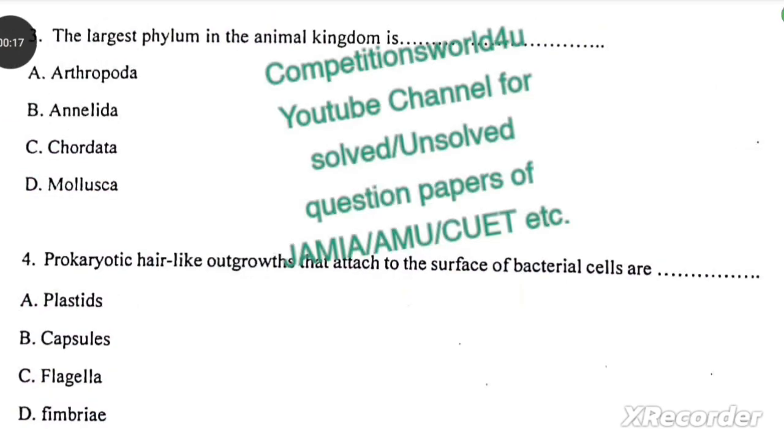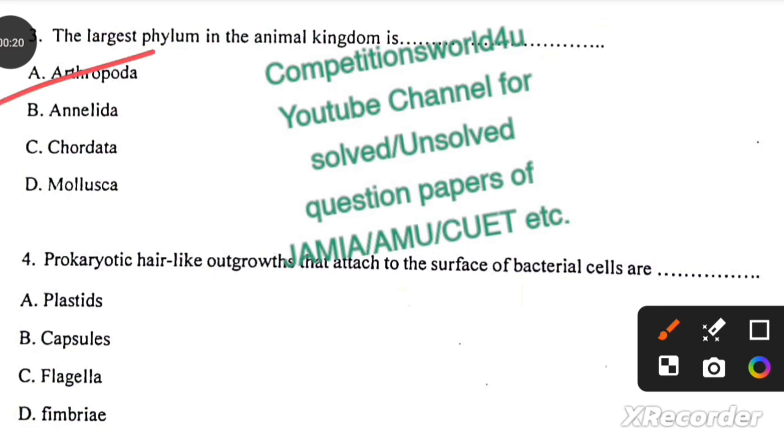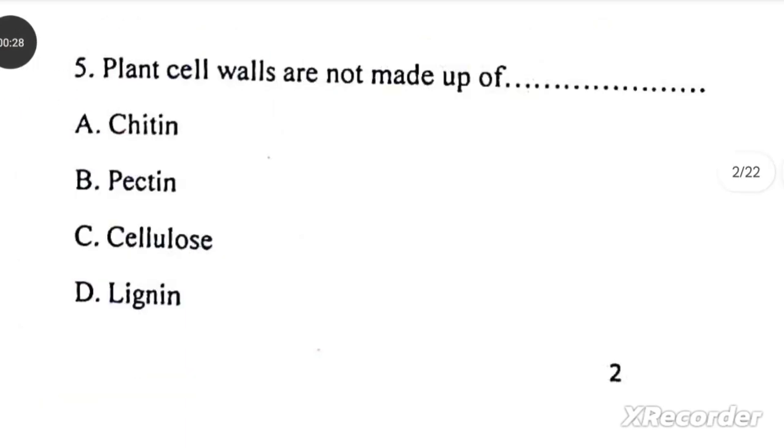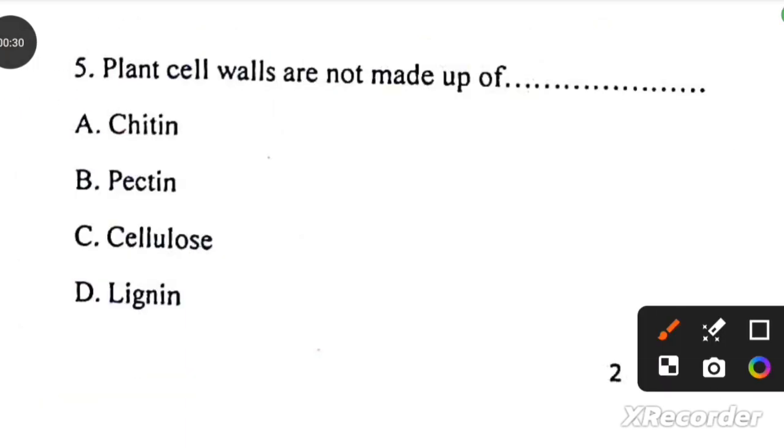The largest phylum in the animal kingdom is Arthropoda. Prokaryotic hair-like outgrowths that attach to the surface of bacterial cells are called fimbri. Plant cell walls are not made up of chitin.